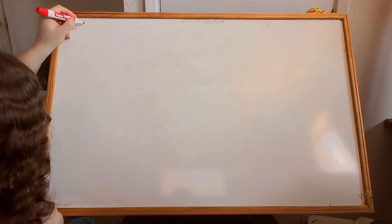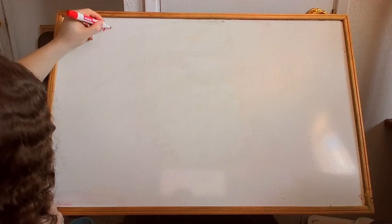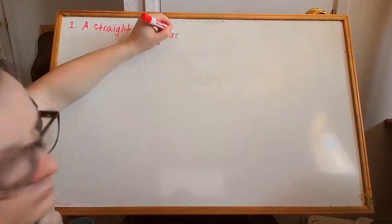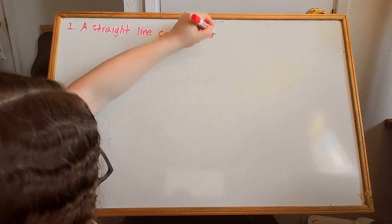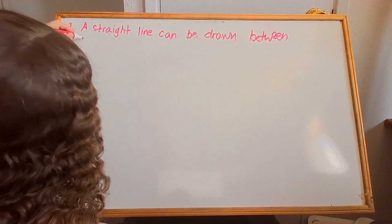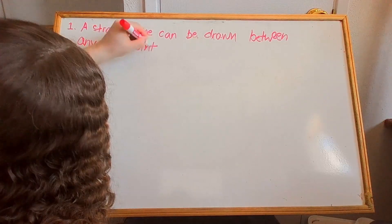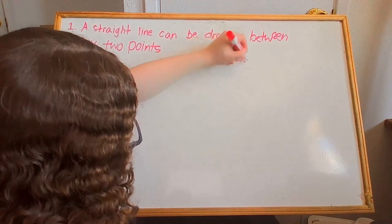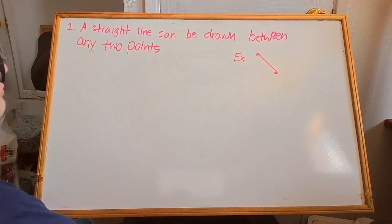Let's look at Euclid's five postulates — not just list them, but try to understand what each one is asserting about space and structure. The first axiom is: a straight line can be drawn between any two points. This means that space is connected and well-behaved. If you have two distinct points, there exists exactly one straight line between them. This axiom forms a basis for defining the simplest geometric object: the line segment.